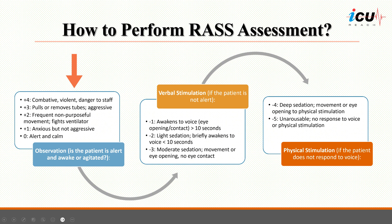If the patient is not awake, provide verbal stimulation like calling their name and evaluate the response. Assign a score of minus 1 if eye contact is made for over 10 seconds, minus 2 if it's less than 10 seconds, and minus 3 if there's movement or eye opening without eye contact. If there's no response to voice, apply physical stimulation by gently shaking the patient. Assign a score of minus 4 if they react, and minus 5 if there's no reaction at all.